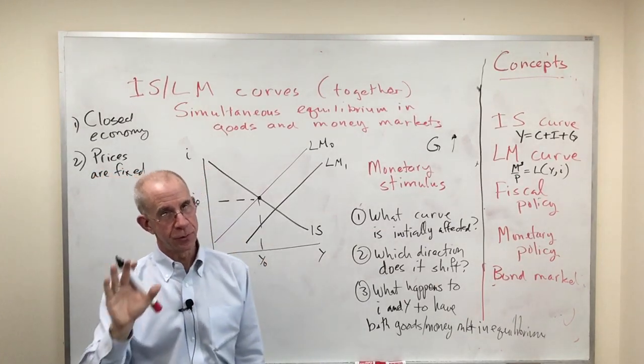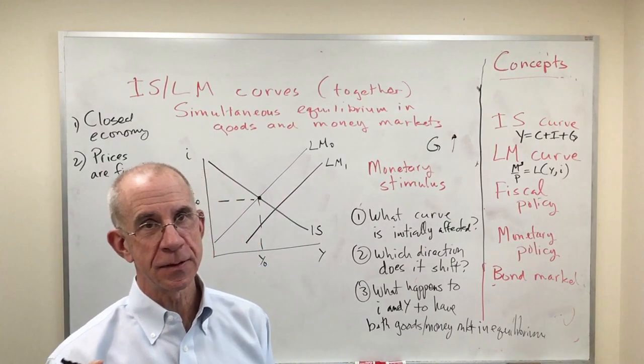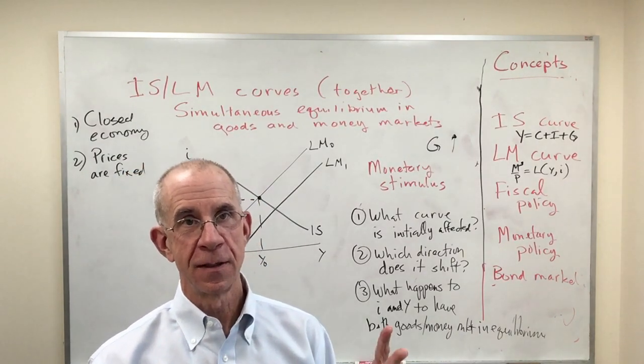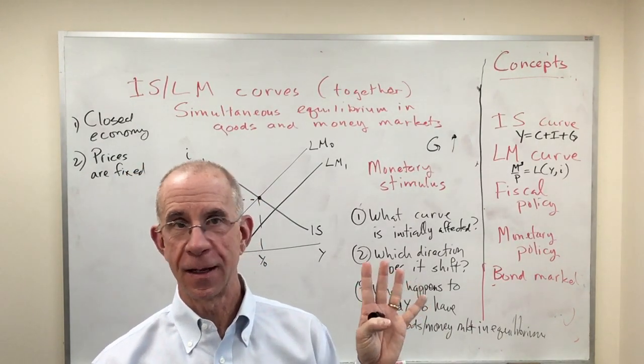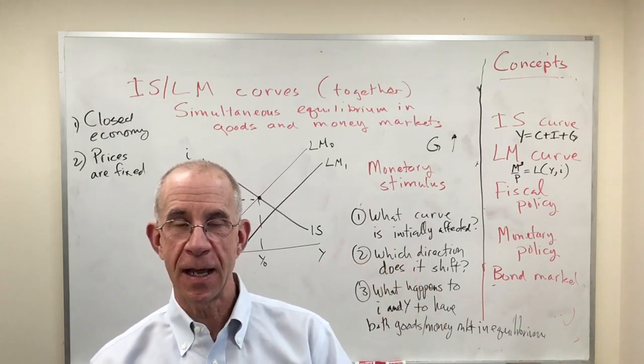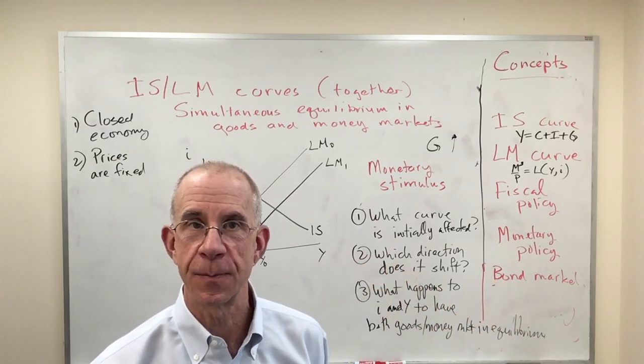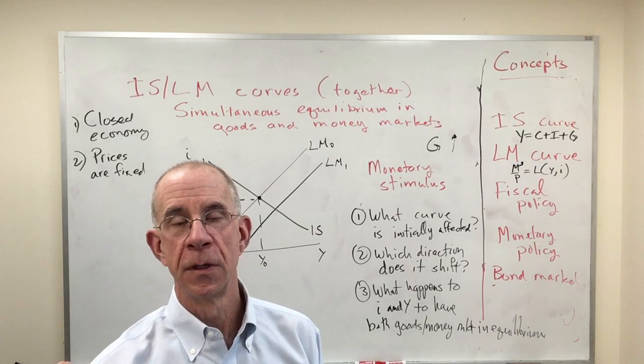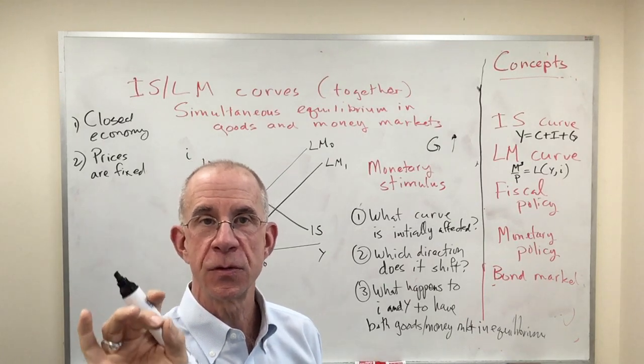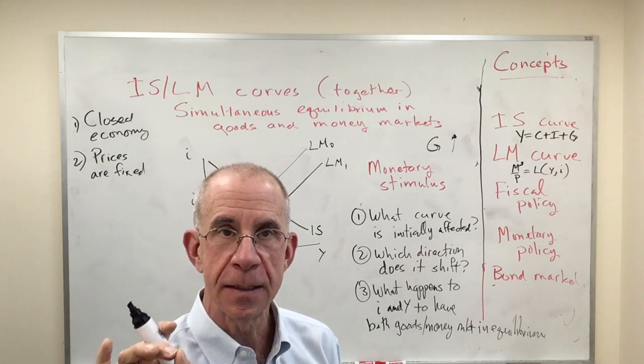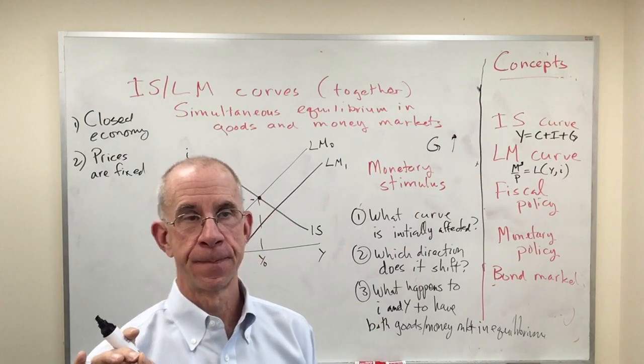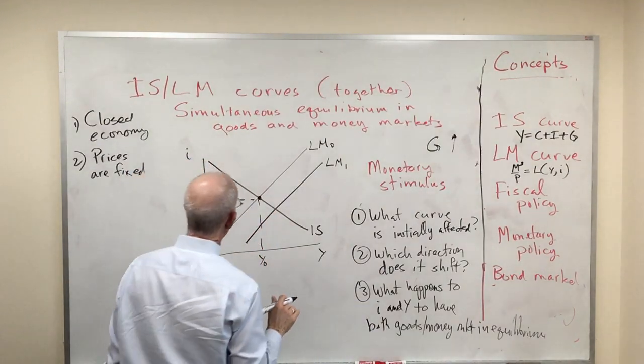Similar to the IS curve, generations of students will tend to say, the LM curve is the supply of money. The increase in the supply of money shifts the LM curve out because that's the aggregate supply of money. No, no, no. It's new combinations of interest rates and output that get the money supply in equilibrium.